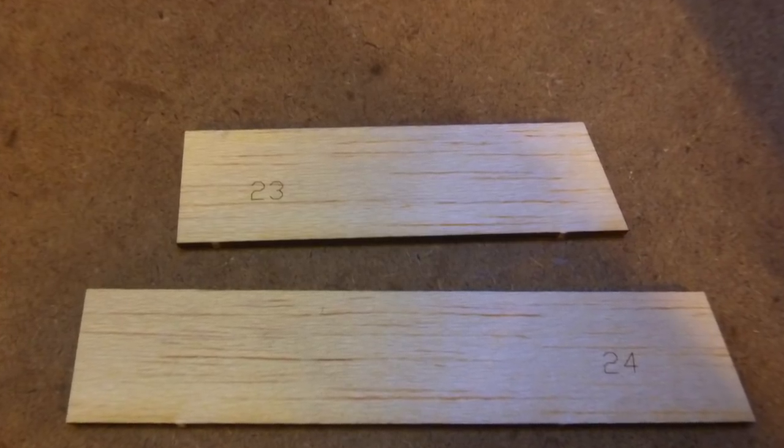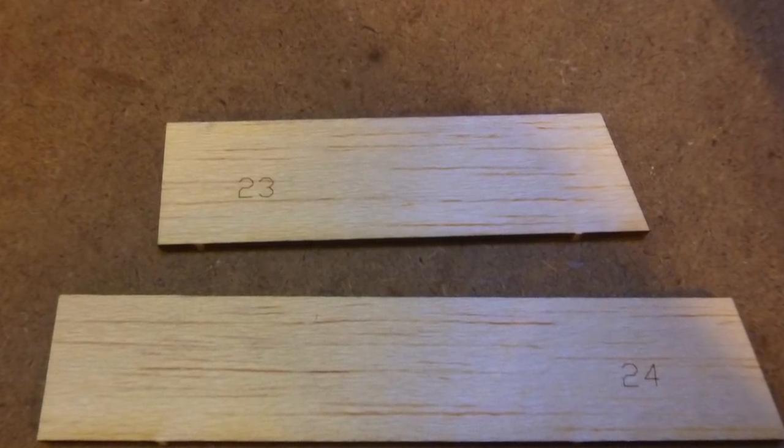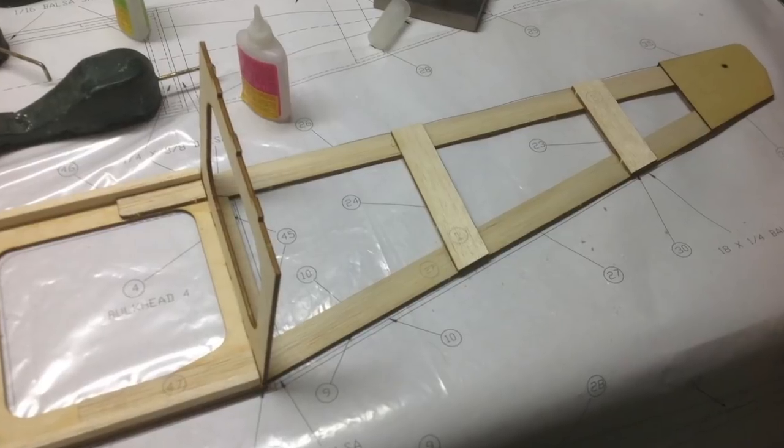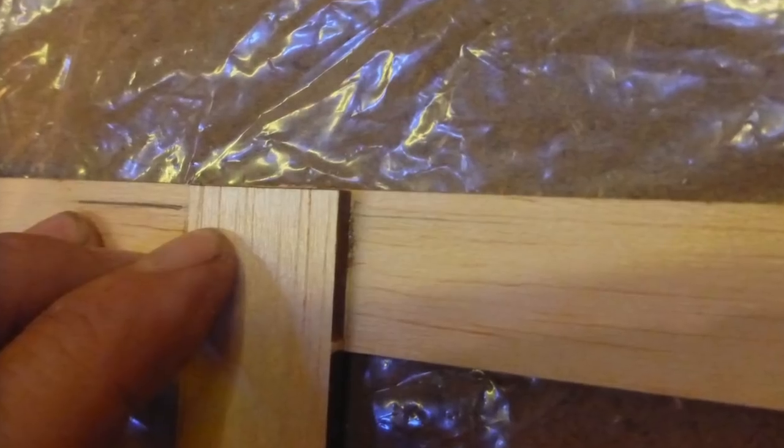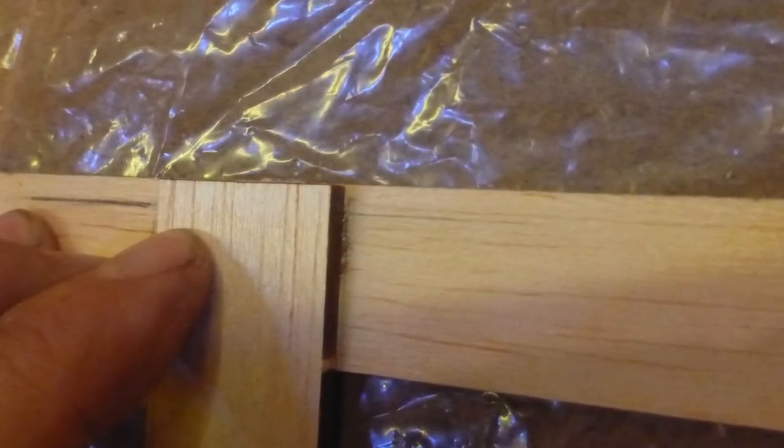Locate vertical stiffeners, part number 23 and 24. Glue them into place, either in their location over the plan, or slide them back until their ends, top and bottom, are flush with the edges of the stringers.